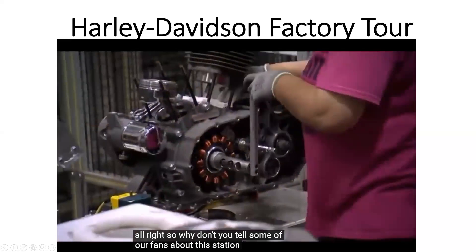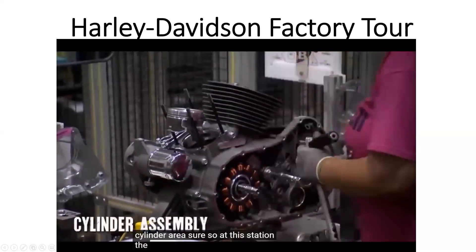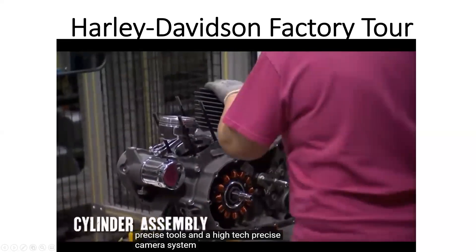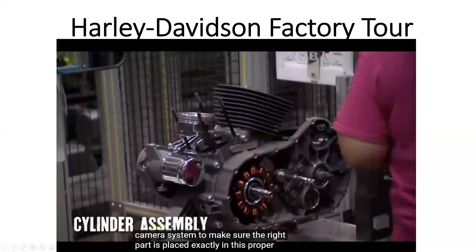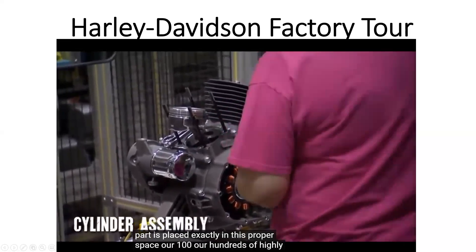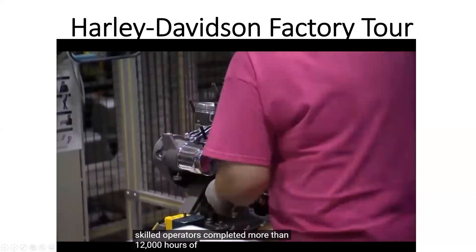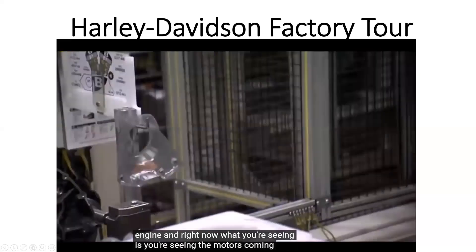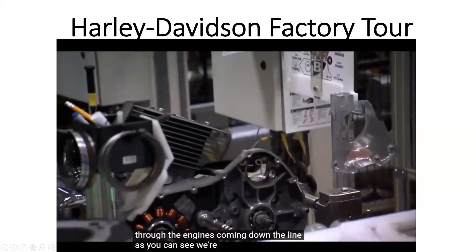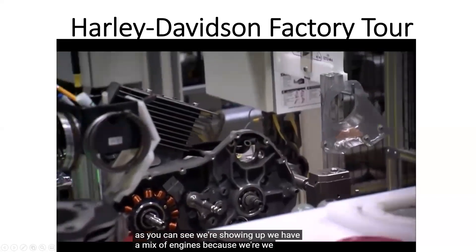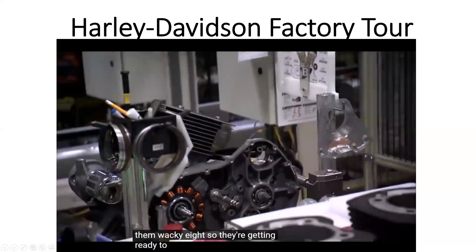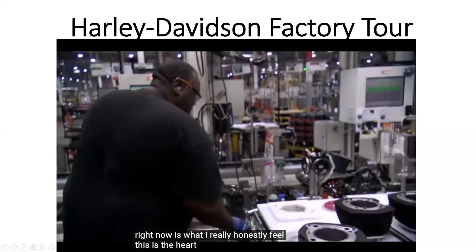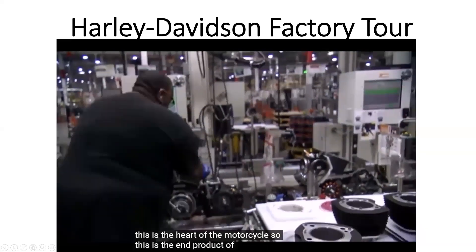At this station, the cylinders are being installed on the all-new Milwaukee 8 engine. We use precise tools and a high-tech precise camera system to make sure the right part is placed exactly in its proper space. Our hundreds of highly skilled operators completed more than 12,000 hours of training to prepare for the launch of the all-new Milwaukee 8 engine. Right now you're seeing the motors coming through — the engines coming down the line. We have a mix of engines: we can do the twin cam series, we can do the Milwaukee 8. They're getting ready to do the final cylinder assembly. This is the heart of the motorcycle.